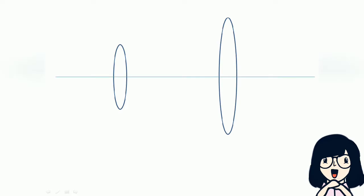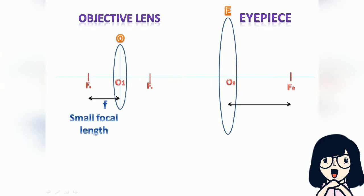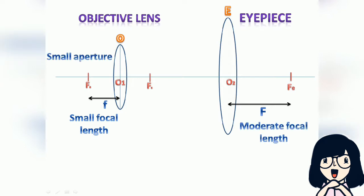In the ray diagram, the objective lens is represented as O and the eyepiece is represented as E. The optical center of the objective lens is O1, while the optical center of the eyepiece is O2. F0 is the focus of the objective lens and Fe is the focus of the eyepiece. The diagram confirms that the focal length and aperture of the objective lens is small, while the focal length of the eyepiece is moderate and aperture is large.